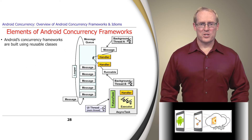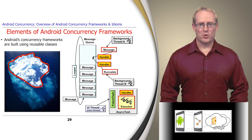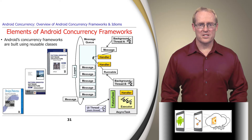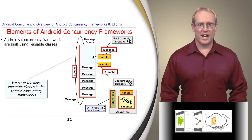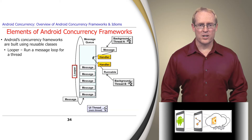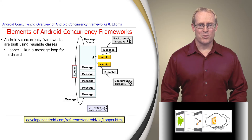The Android concurrency frameworks discussed in this module are built using a number of reusable classes, some of which are directly visible to users, while others are largely hidden below the surface. The design, implementation, and integration of these classes are guided by many POSA and Gang of Four patterns. Some classes are used by both the HaMeR and AsyncTask frameworks. For example, a looper runs a thread-specific event loop that waits for and dispatches messages to handlers.